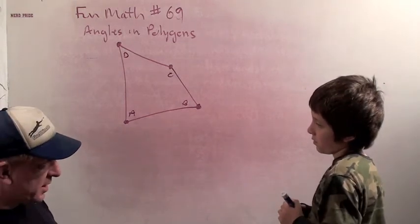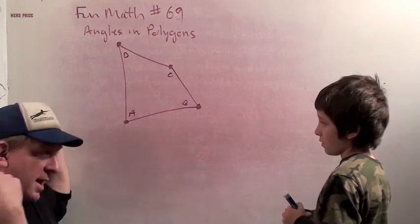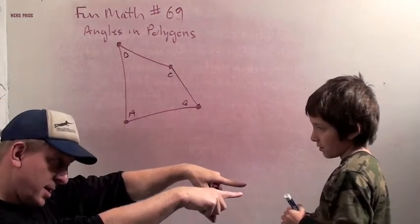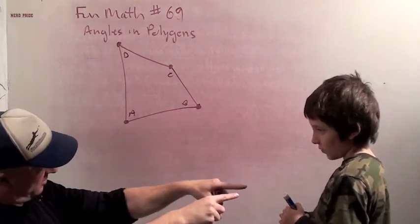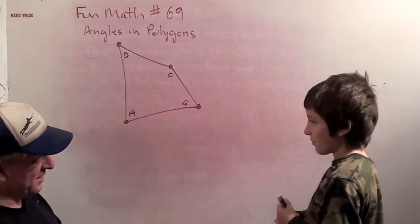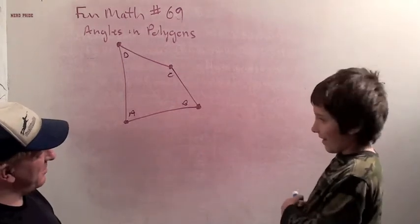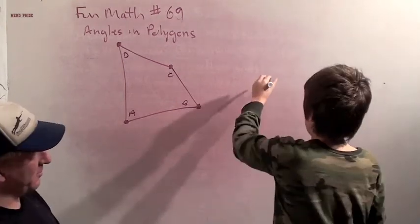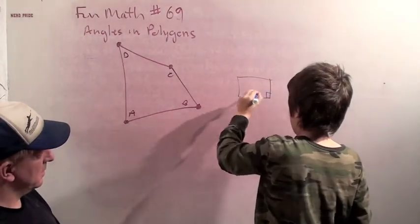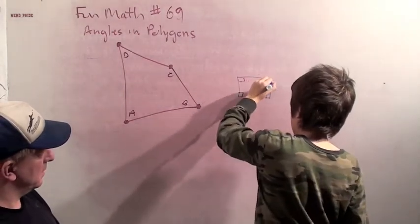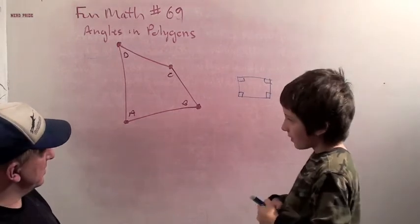Now we can pick simple examples of quadrilaterals like a square. What do the angles in a square add up to? 180. 360. Why do they add up to 360? Draw a square for fun. Each of these angles is 90. Four times 90 is 360.